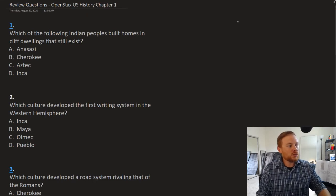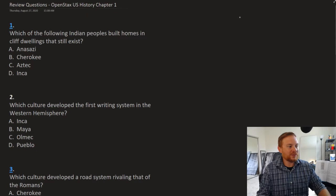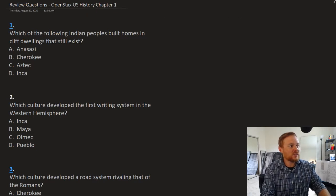Number one, which of the following Indian peoples built homes in cliff dwellings that still exist? The right answer, we'll use a different color. The right answer to this question is A, the Anasazi.